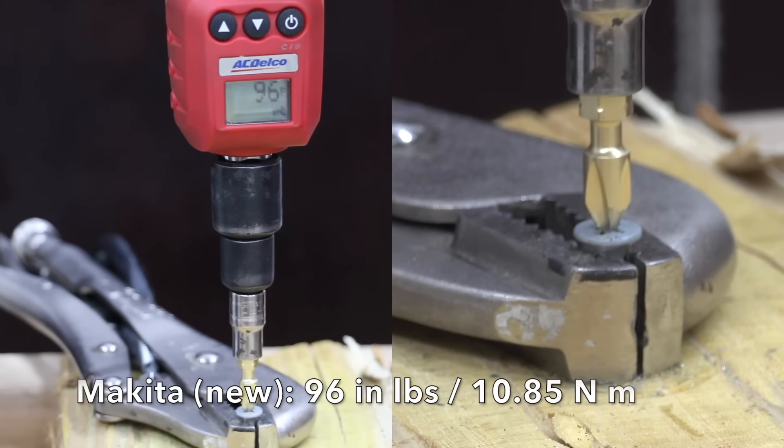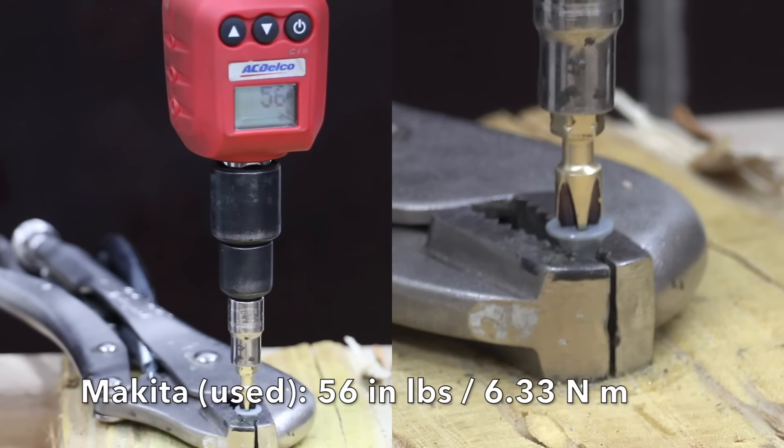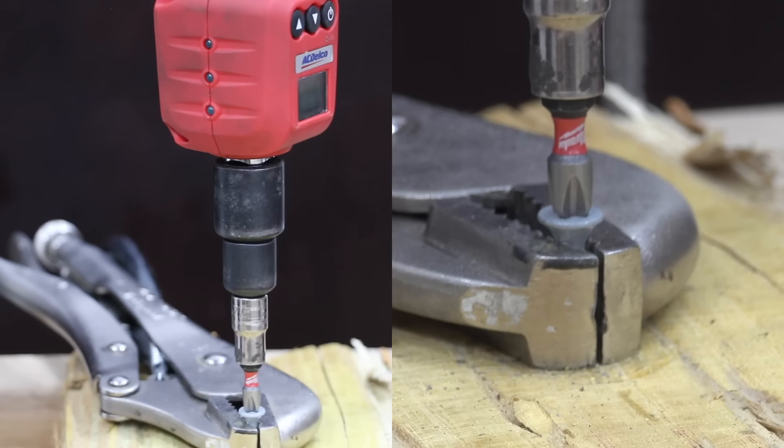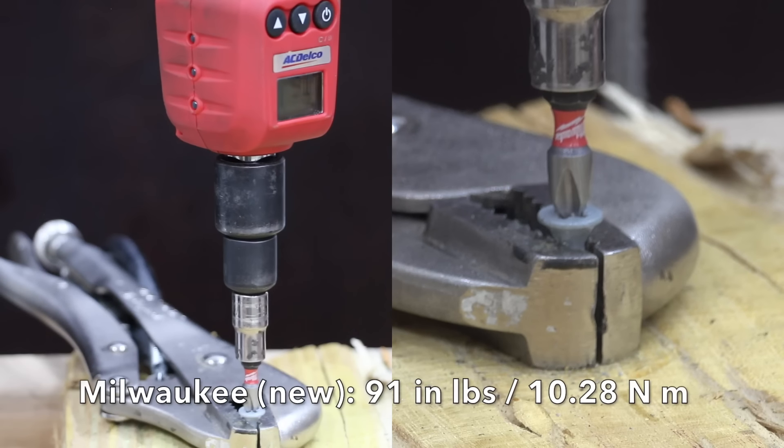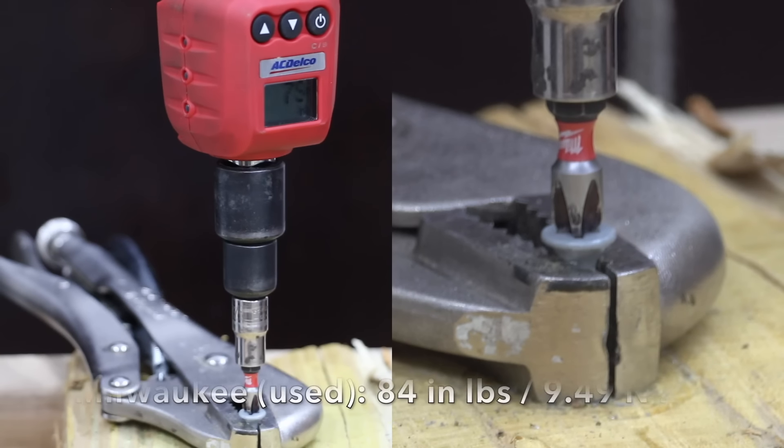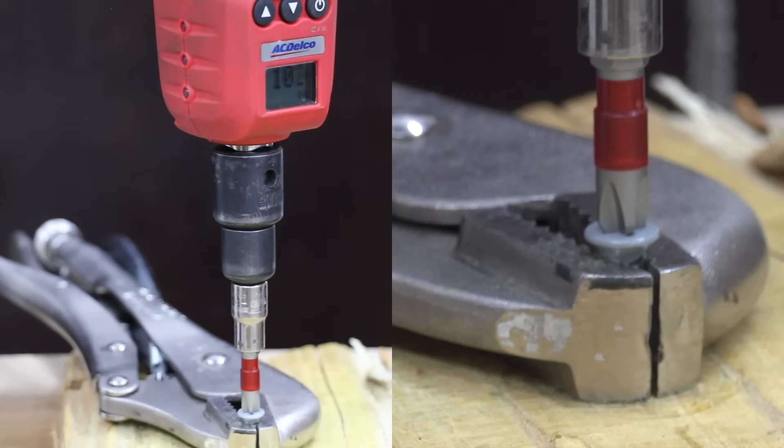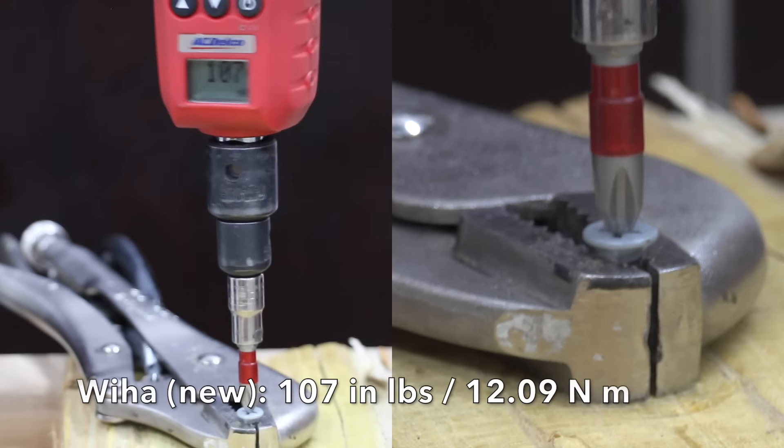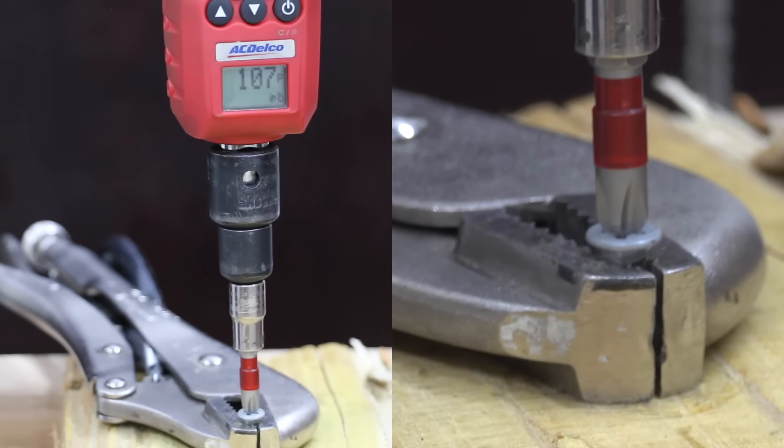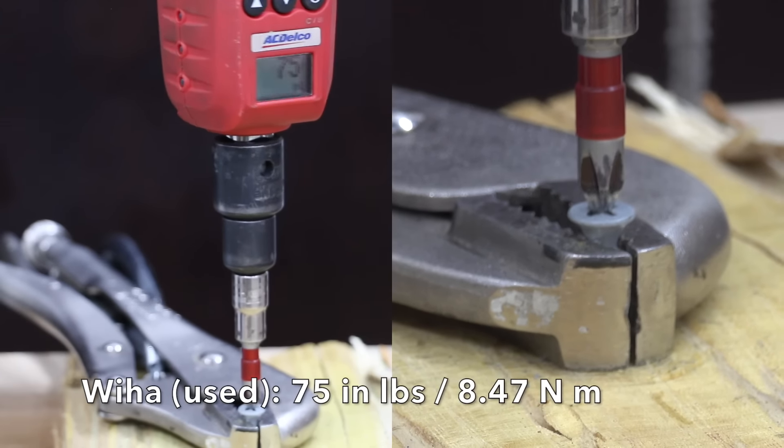The new Makita cammed out at 96. The used Makita really struggled at 56. The new Milwaukee lost traction at 91. The used Milwaukee did the best yet at 84, which is nearly as good as the new impact driver bit. The new Weha did the best yet at 107 inch pounds. The used Weha did well above average at 75, but not as good as the Milwaukee.